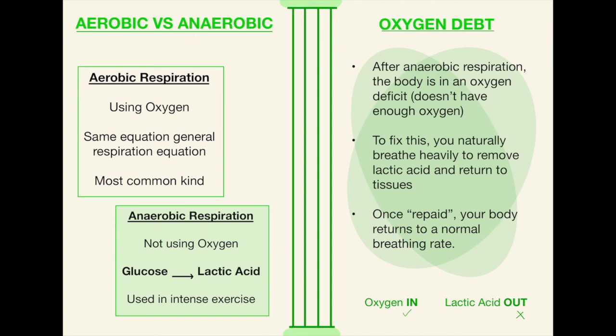Oxygen debt. So after anaerobic respiration the body is in what we call an oxygen deficit or oxygen debt effectively and it means that we just need to repay our body of that oxygen which is why we breathe really heavily after we do this exercise. When we're breathing in all this extra oxygen after what we're mainly trying to do is flush out that lactic acid and return the oxygen to the tissues where it is absent and then once it's repaid your body just returns to a normal breathing rate.